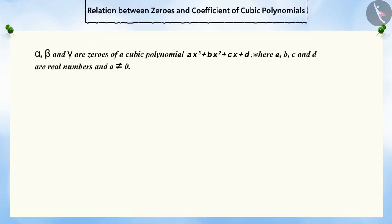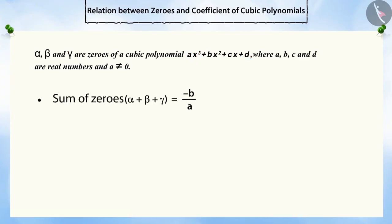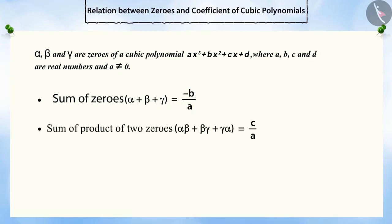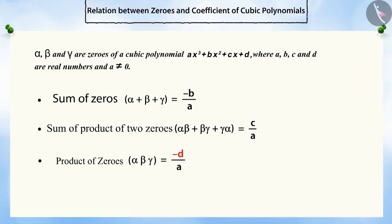Similarly, if alpha, beta, and gamma are zeros of a cubic polynomial AX cubed plus BX squared plus CX plus D, then the sum of the zeros is minus B by A, the sum of the product of two zeros is C by A, and the product of all zeros is minus D by A.